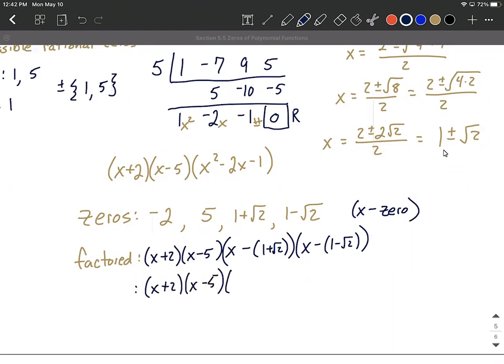Now we can clean this up just a little bit by getting rid of those sets of parentheses inside the other sets of parentheses. So we can say by distributing that negative, we get x minus 1 minus the square root of 2 inside that set, and x minus 1 plus the square root of 2 inside that last set of parentheses. So what we've accomplished is we completely factored this using some synthetic division, picking out our zeros, connecting together zeros and factors.